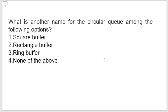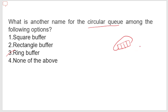Next: what is another name for a circular queue? Options are square buffer, rectangle buffer, ring buffer, and none of the above. The answer is ring buffer. In a circular queue, the last element is connected back to the first element forming a circle, therefore it is also known as a ring buffer.